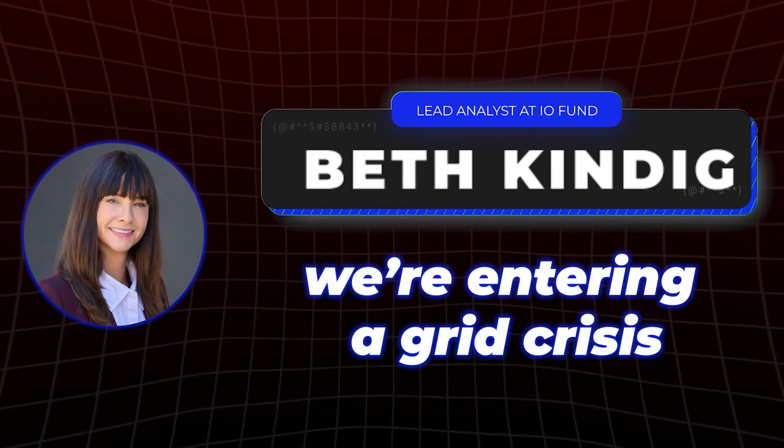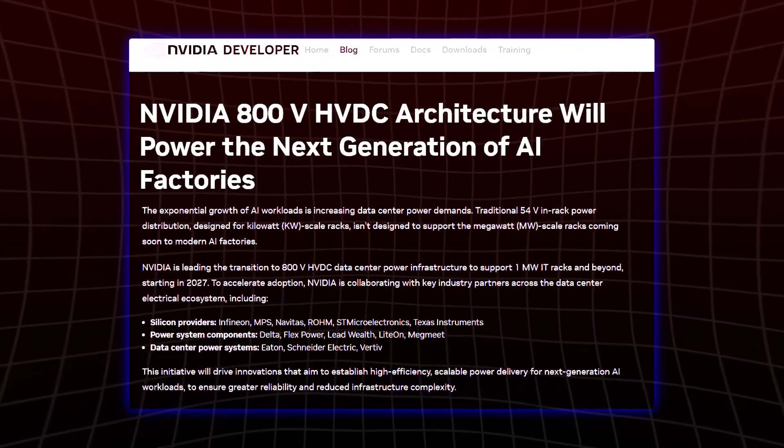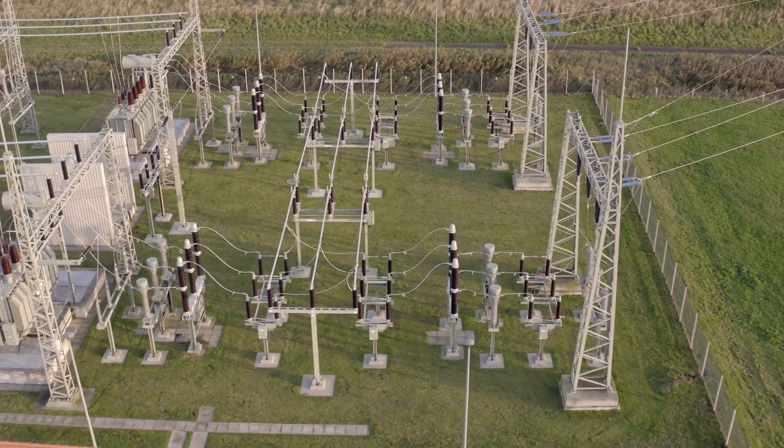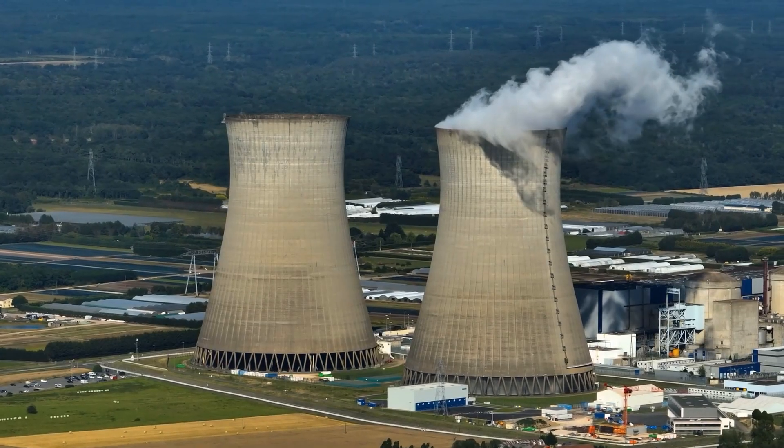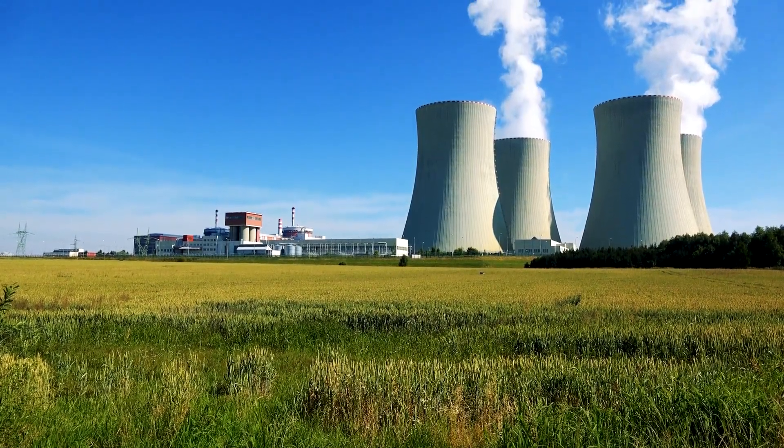As Beth Kindig emphasized, we're entering a grid crisis. AI chips like NVIDIA's Rubin Ultra are pushing energy demand into overdrive. But if the traditional grid can't keep up, then modular mobile nuclear power becomes a must-have solution, not just a futuristic idea.